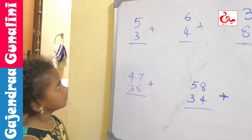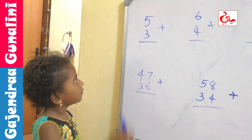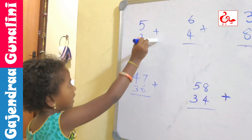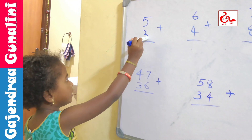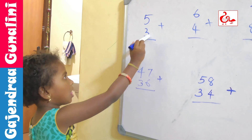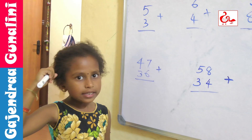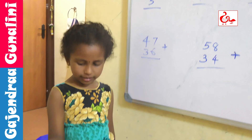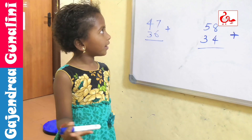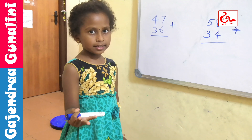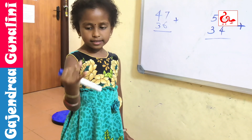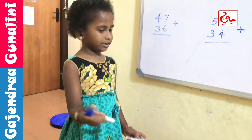First sum: 5 plus 3. 5 in the mind, 3 in the finger. 5 after: 6, 7, 8.